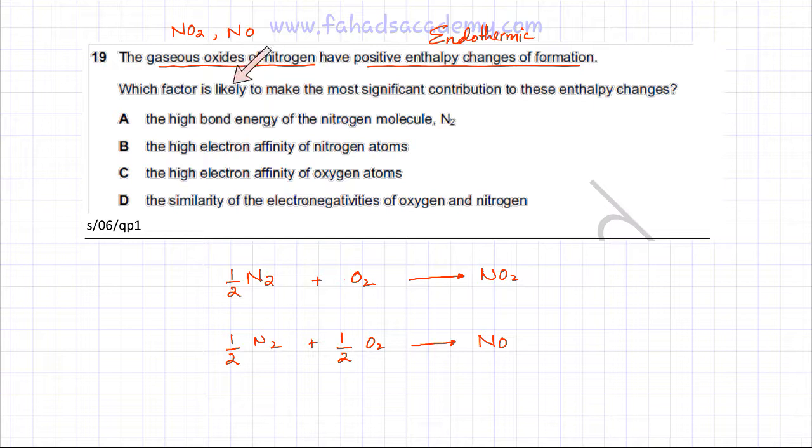Now he's saying which factor is most likely to make the most significant contribution to these enthalpy changes. So both of them are endothermic. The enthalpy change of formation values are positive. So it's endothermic - they're absorbing energy. And we're going to figure out why the reaction is endothermic.